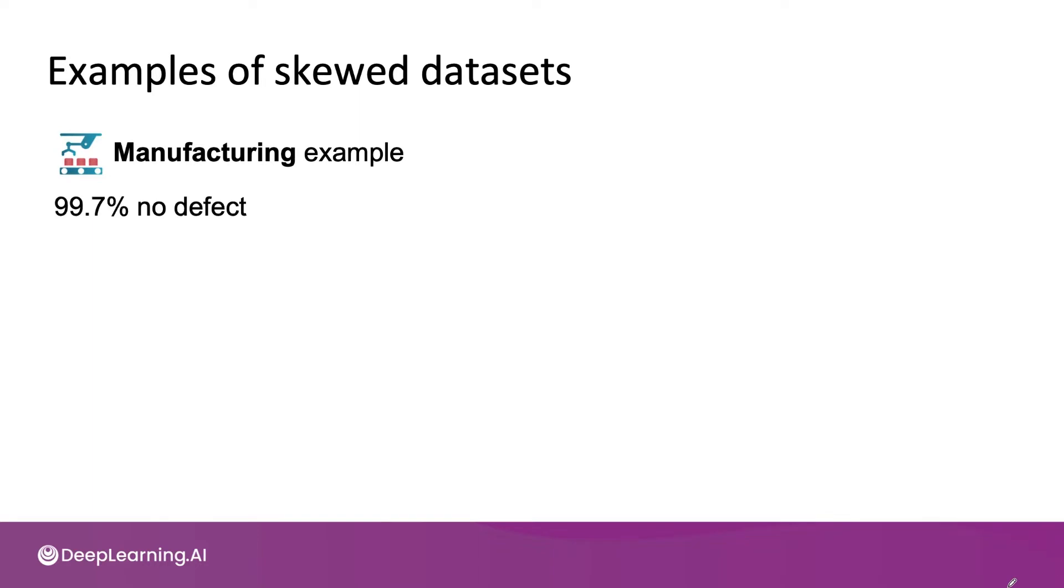Let me start with a manufacturing example. If a manufacturing company makes smartphones, hopefully the vast majority of them are not defective. So if 99.7 percent have no defect and are labeled y equals 0, and only a small fraction is labeled y equals 1, then print 0, which is not a very impressive learning algorithm, will achieve 99.7 percent accuracy.